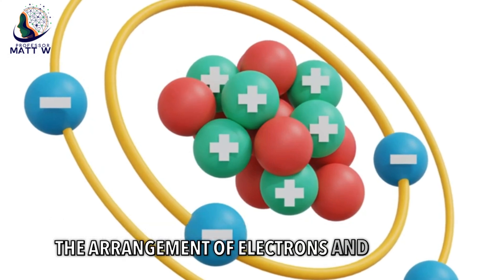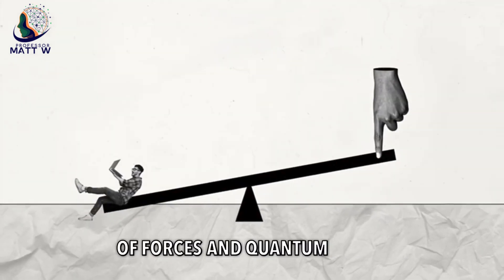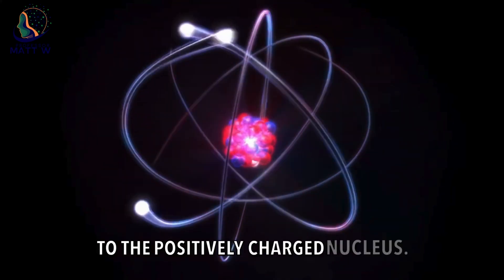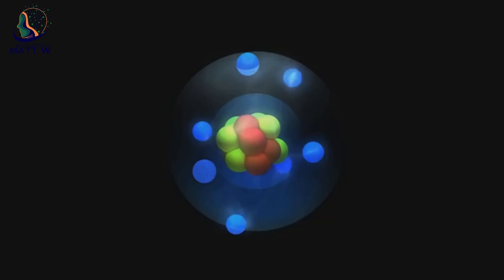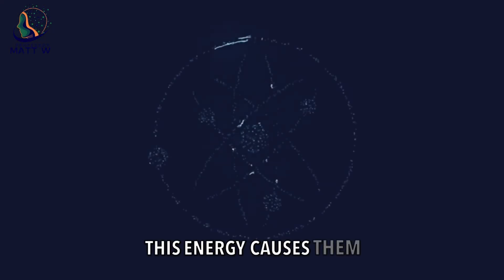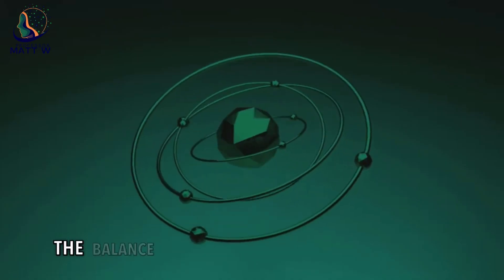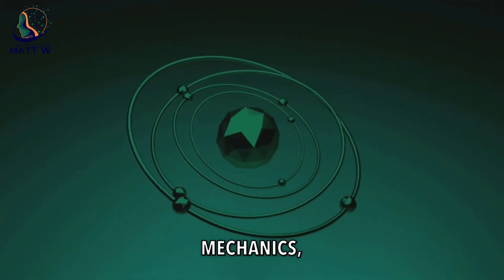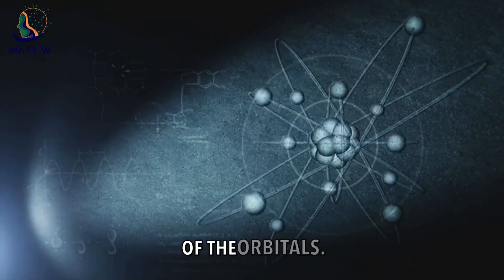The arrangement of electrons and orbitals is not arbitrary. It is governed by a delicate balance of forces and quantum rules. The negatively charged electrons are attracted to the positively charged nucleus. This electrical attraction pulls the electrons closer to the nucleus. However, electrons also possess kinetic energy. This energy causes them to resist being confined to a small space. The balance between these opposing forces, along with the constraints imposed by quantum mechanics, determines the size and shape of the orbitals.